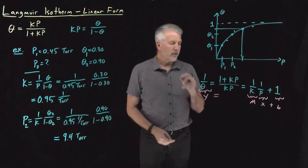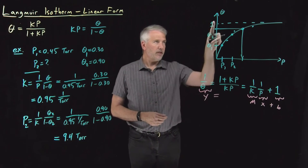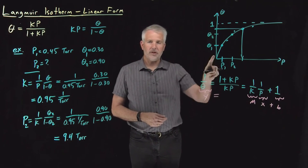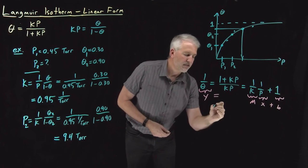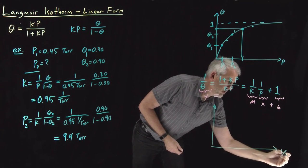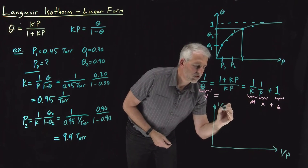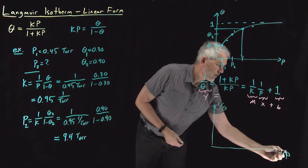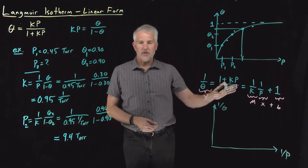That looks like a linear equation. Y is equal to some slope m times some independent variable x and then some intercept b. So now that I've thought of the equation in this way, it tells me that if I, rather than plotting surface coverage as a function of pressure, if instead I plot one over surface coverage as a function of one over the pressure, I'm going to get a straight line.